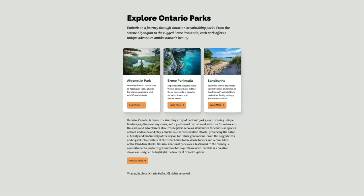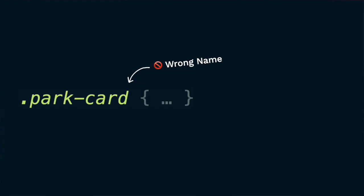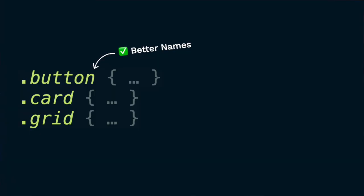Once we've identified which parts of the layout will convert into blocks, we need to give them names. One tip for naming entities in BEM is to describe the layout instead of the content. For example, we have this page about parks in Ontario. We could name the card a 'park card', but if you want to reuse this card on a page about lakes in Ontario, that name won't work semantically. So always describe the layout in the block name rather than the content.